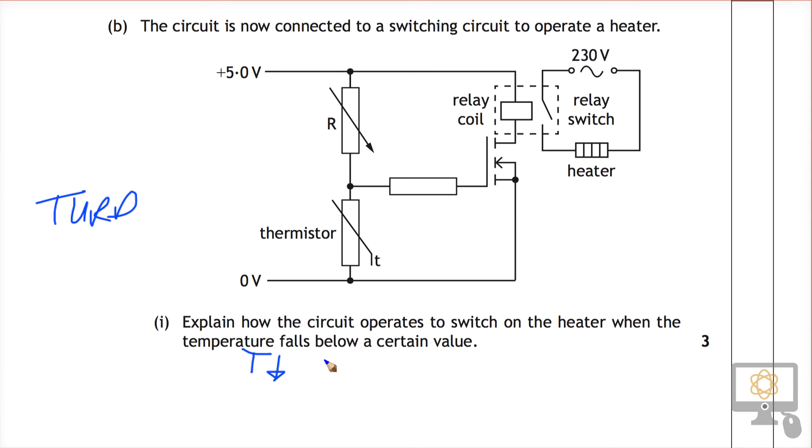But the temperature goes down, the resistance goes up. But you must be very clear about what resistance you're talking about, because R relates to the resistance of the variable resistor. So we're really talking about the resistance of the thermistor. So you can either write it as RT, or you can be explicit and state that it's the resistance of the thermistor that rises. So that's the first statement for one mark.